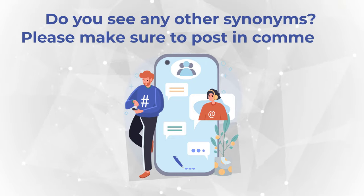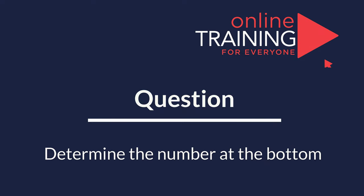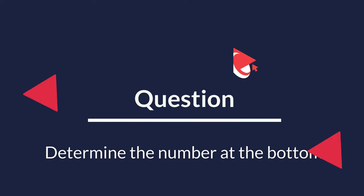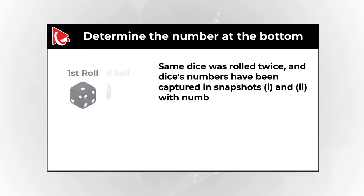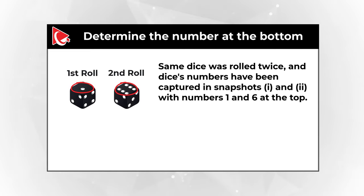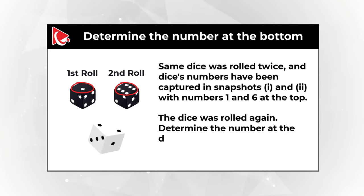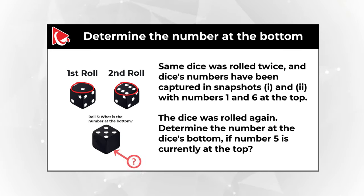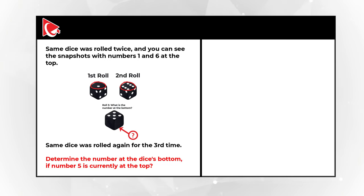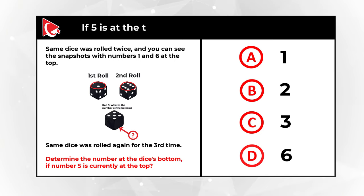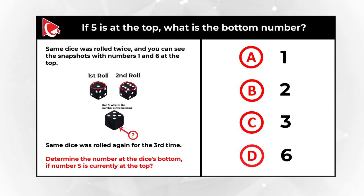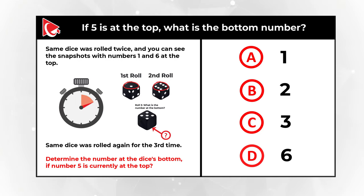Here is an interesting question where you need to determine the dice's number at the bottom. The dice was rolled twice, and the dice's numbers have been captured in snapshots 1 and 2 with numbers 1 and 6 at the top. The dice was rolled again — you need to determine the number at the dice's bottom if number 5 is currently at the top. You have four choices: Choice A, 1; Choice B, 2; Choice C, 3; Choice D, 6. Please take a close look because the answer may not be obvious.